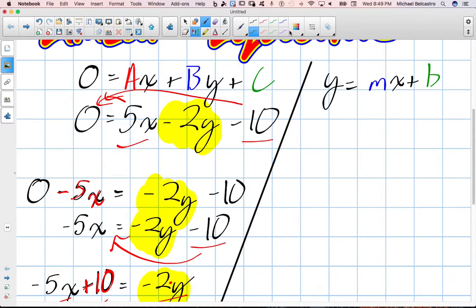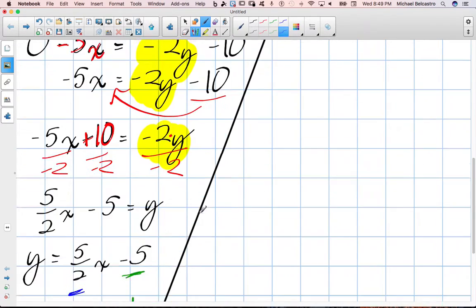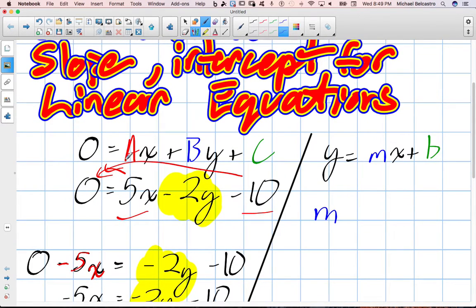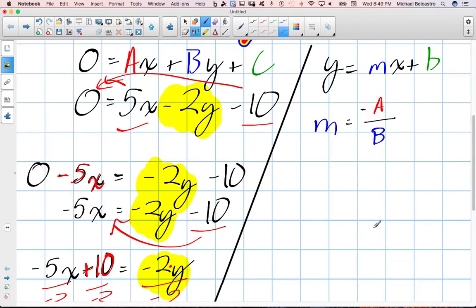One of them is that m, when referencing the standard form here, your m value, if you notice, when we go down here, it becomes 5 over 2. So m is actually, or I should say actually negative a, m is equal to negative a divided by b. So, what does that mean for us as a formula?